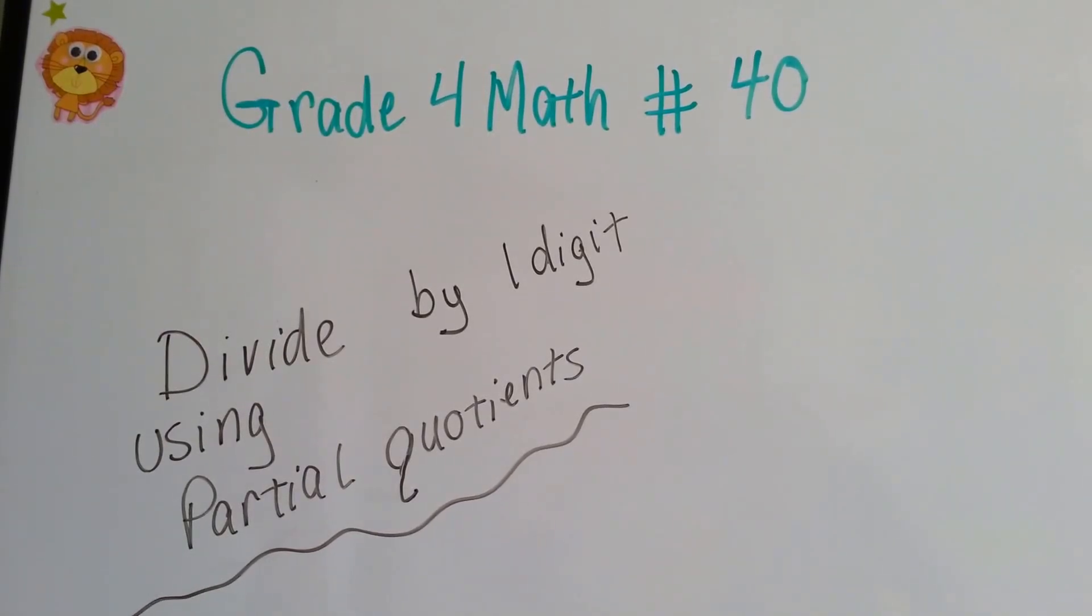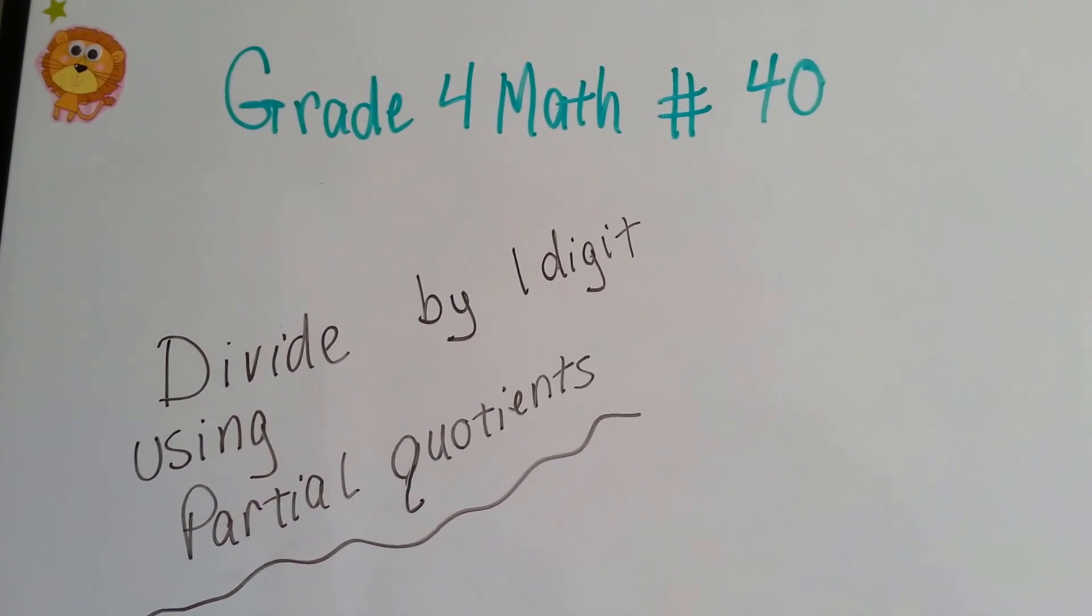Grade 4 math, number 40, divide by one digit using partial quotients.